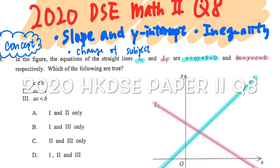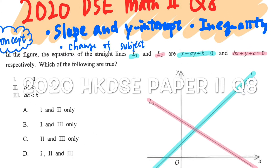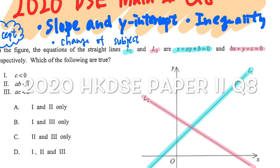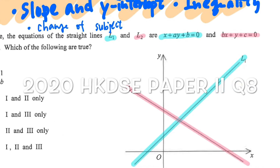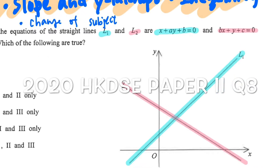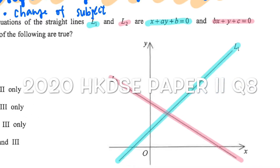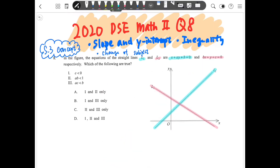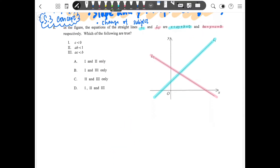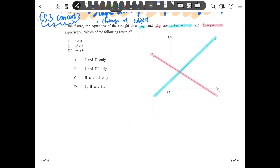Hi guys, today I'm going to cover the 2020 DSC past paper, Paper 2, Question 8, which covers S3 concepts — it's quite challenging. My usual practice is to highlight L1 and L2 with different colors because you will easily mix them up.